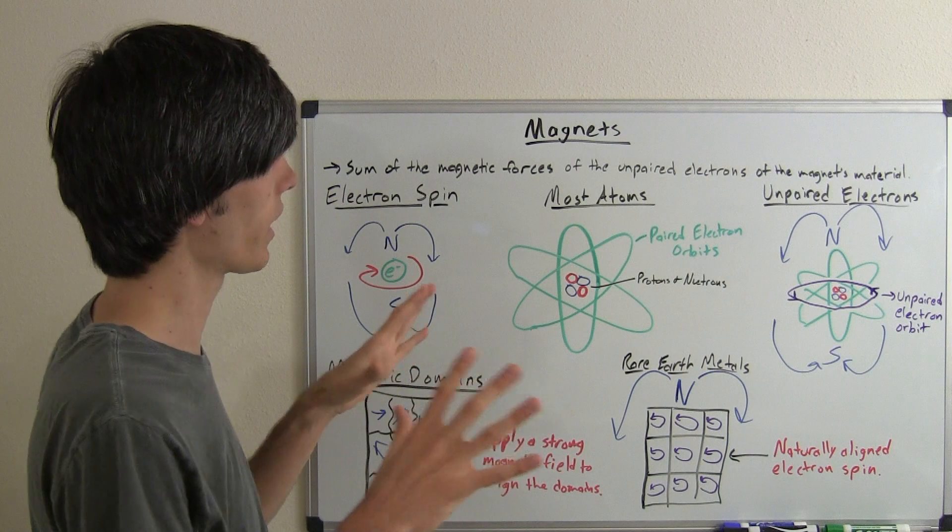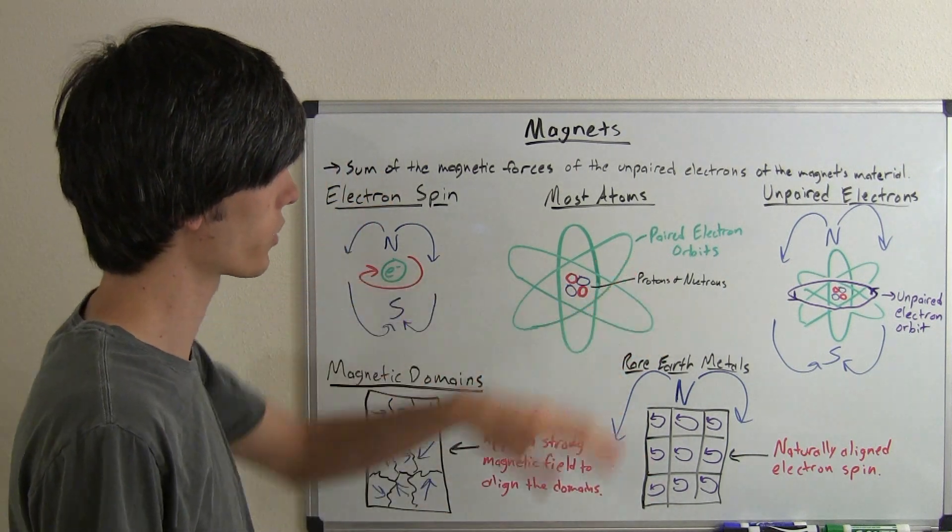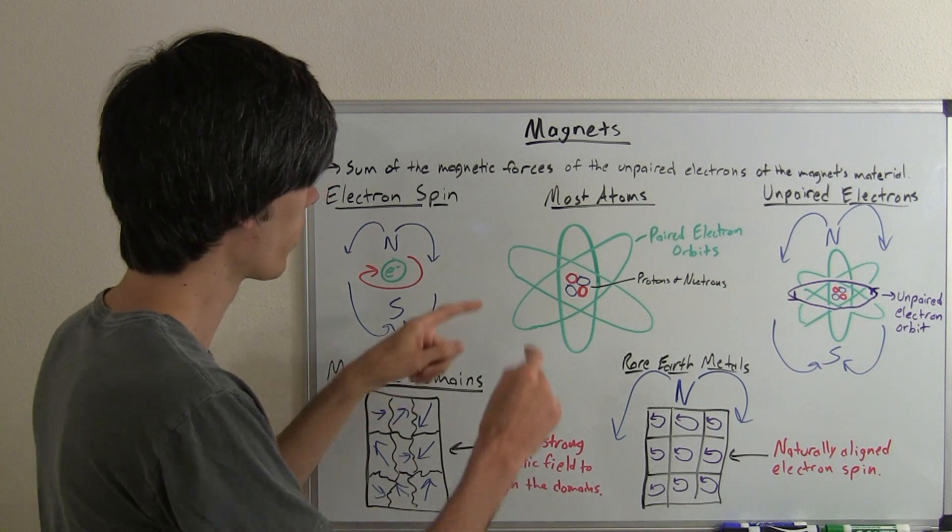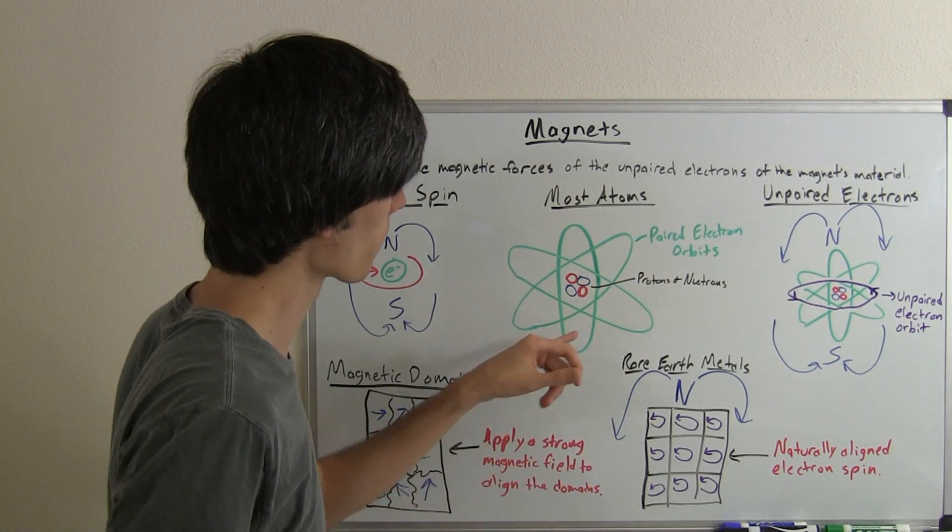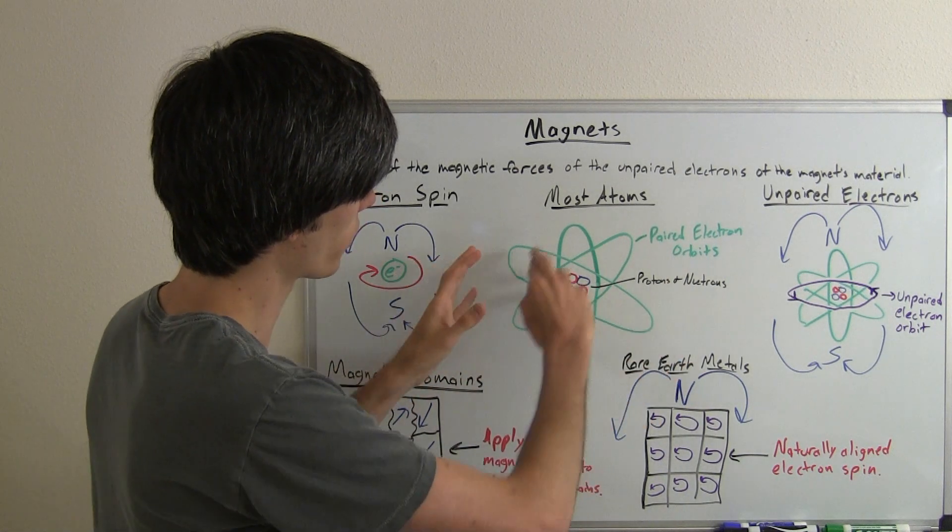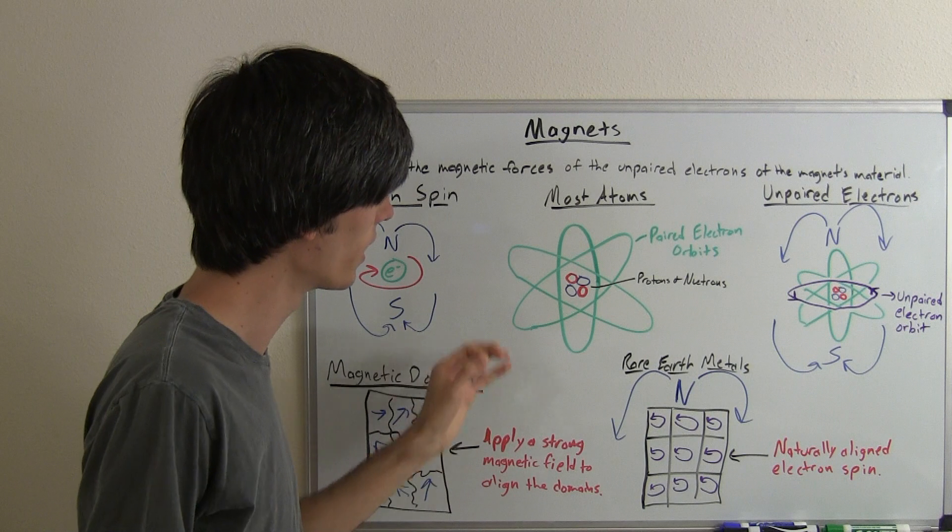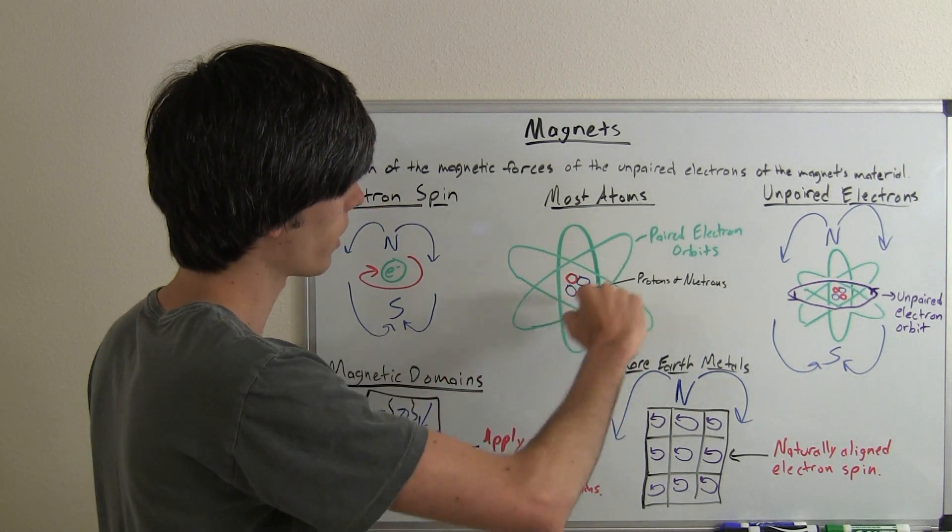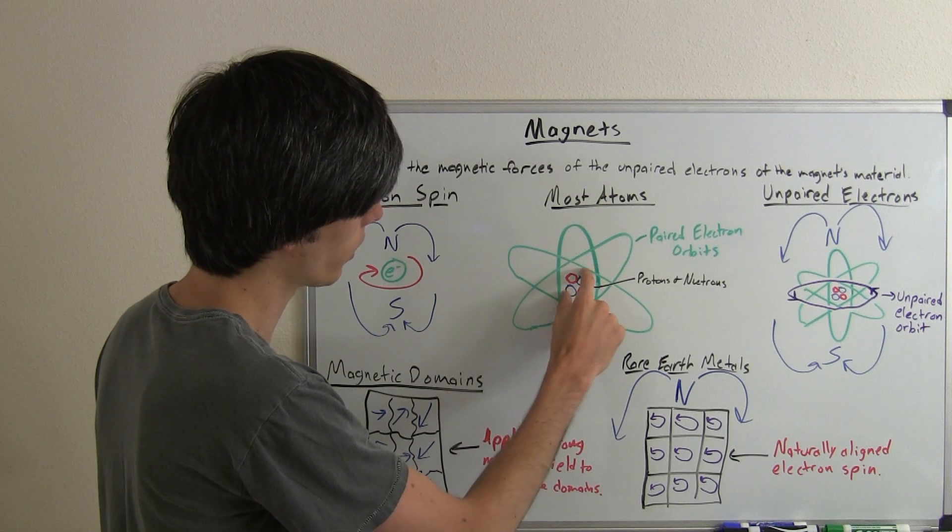So most atoms of most materials have paired electron orbits. So that means that there's two electrons going around in an orbit. So here we've got just a basic visualization, very oversimplified of what an atom looks like, and you've got these electrons moving around the protons and neutrons of the atom.